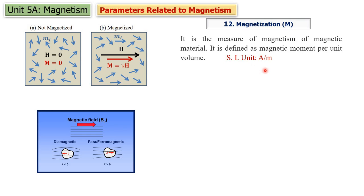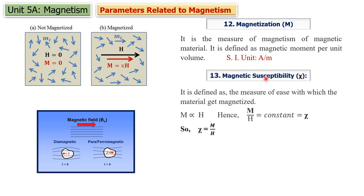Its unit is ampere per meter. Now when we keep this material in an external magnetic field, the magnetic flux passes through it and the material gets magnetized. But how easily the material gets magnetized — how easily it allows the magnetic flux lines to pass through it so that it gets magnetized — that property is called susceptibility. In the figure you can see more flux is passing through the material, so this material gets easily magnetized and therefore has greater susceptibility; chi is greater than zero.